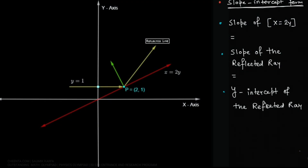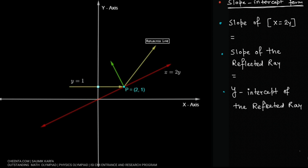Let us understand the problem using the diagram. This red line here is the mirror. This line y=1 is the incident ray, and it is reflecting along this line. We need to find out the equation of this reflected line.